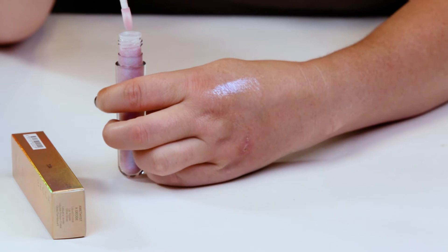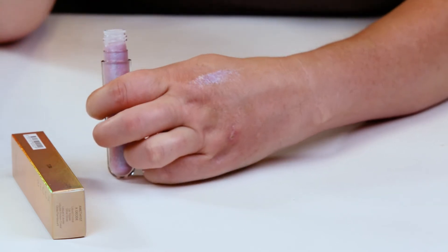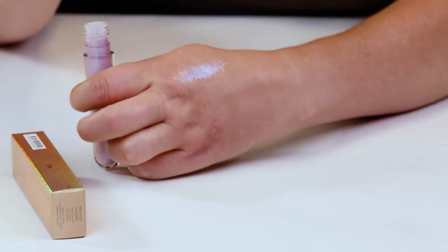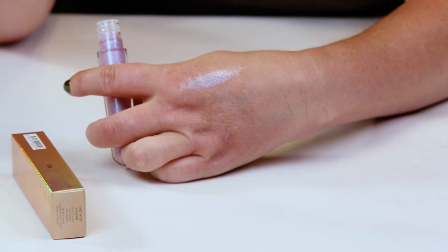You can tell if you're looking at it from very close up or on a different object, you can kind of see the duochrome shift in it. But once you apply it to your lips, it just isn't pigmented enough for you to actually really see it.